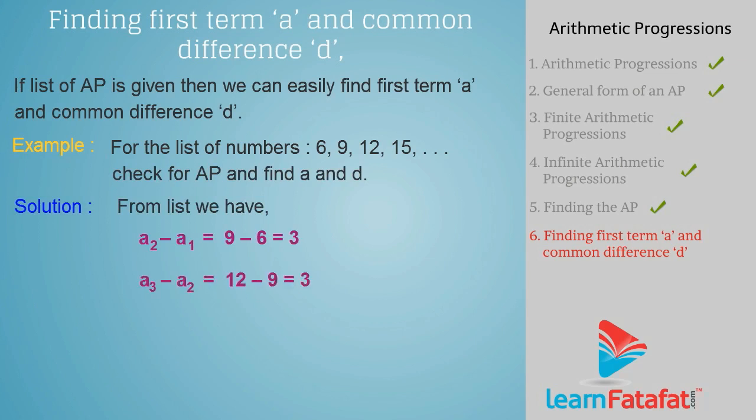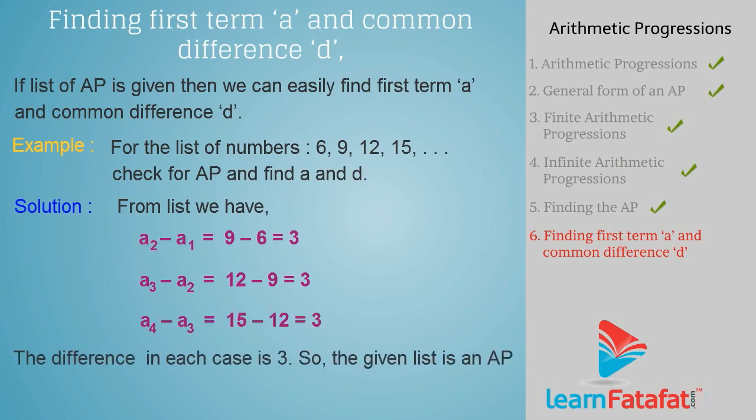Solution. From the list, we have A2 minus A1 equals 3, A3 minus A2 equals 3, A4 minus A3 equals 3. Here, the difference in each case is 3. So the given list is an AP whose first term A is 6 and common difference D is 3.